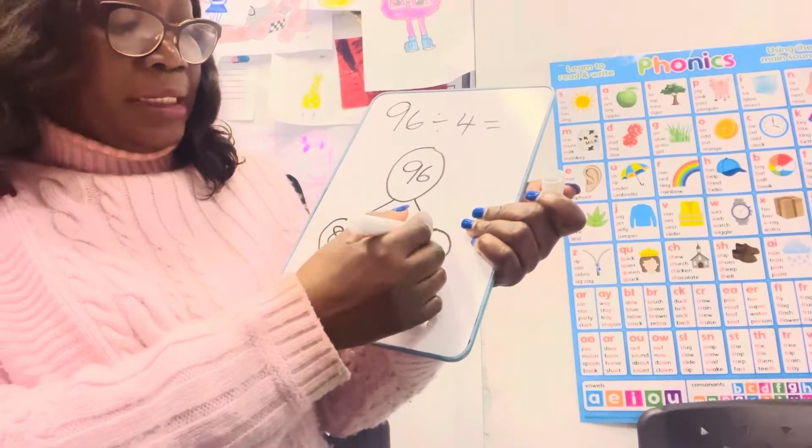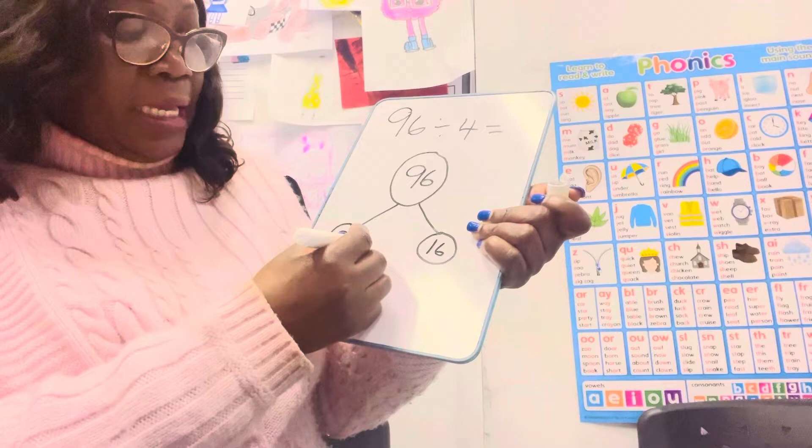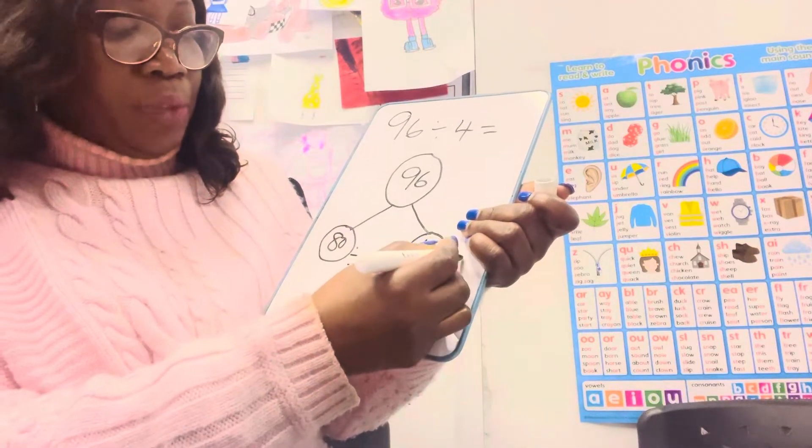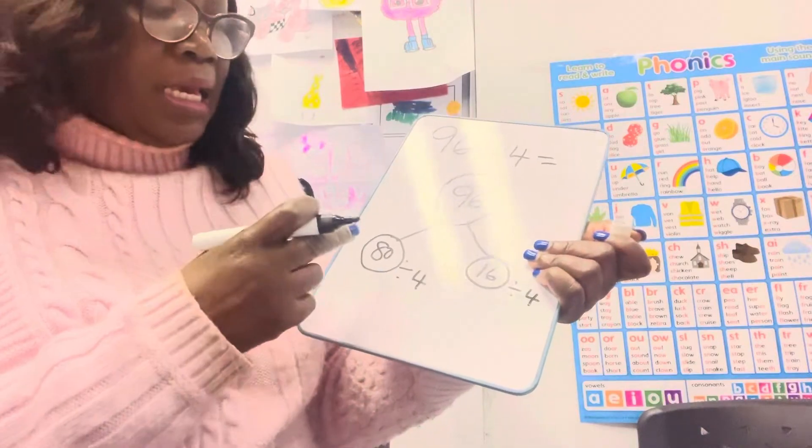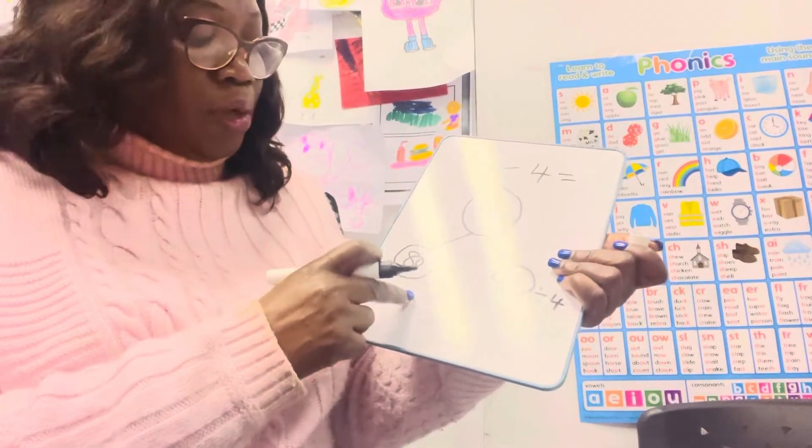Then we divide each number by 4. Each number we divide by 4. We might not be able to know when you divide 80 divided by 4.